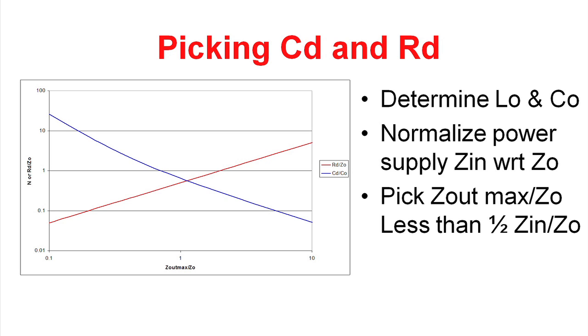So to use this curve, what you want to do is you want to normalize your power supply input impedance with respect to Z0. And so from our first chart, we saw that the power supply input impedance was equal to basically the operating point. That is, the input voltage divided by the input current at low line. So you divide that value by the characteristic impedance of the filter, and you enter onto this curve.